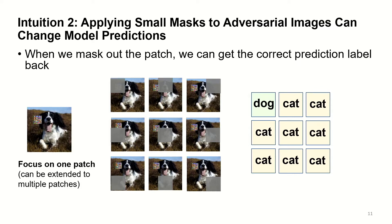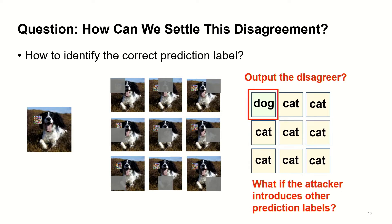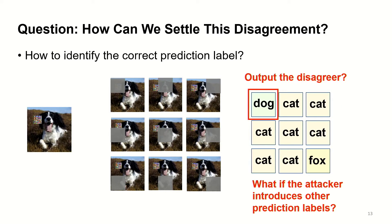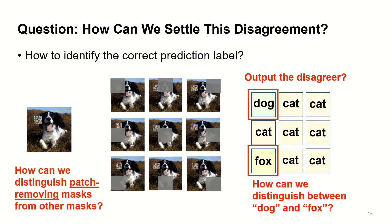I will focus on the case of one patch. Given this disagreement, how can we identify the correct prediction label? We might want to output the minority label 'dog' because only one mask removes the patch. But the problem is the attacker knows the defense strategy and can introduce other labels — all remaining predictions are under the attacker's control since their masks don't remove the patch. The attacker might change 'cat' to 'fox' at different locations. So how can we distinguish 'dog' from 'fox,' or equivalently, identify the mask that removes the patch?